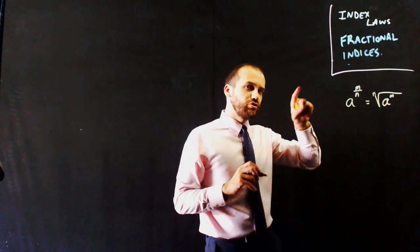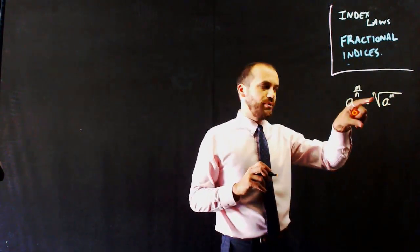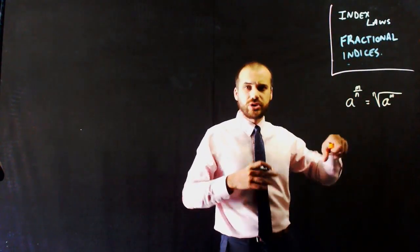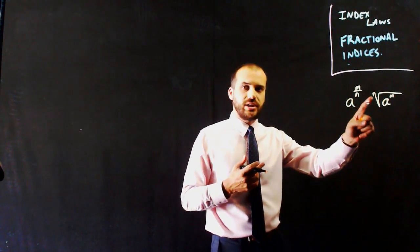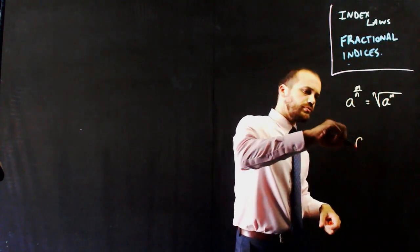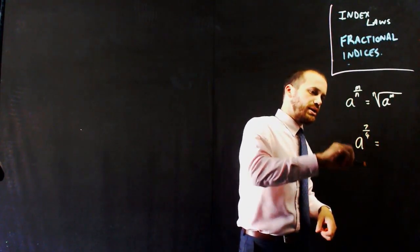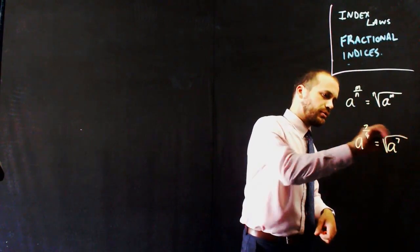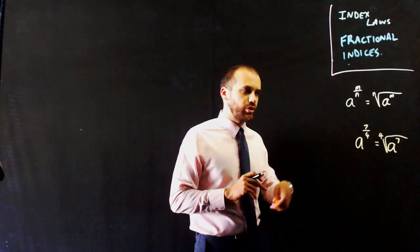So if you draw a root sign with no n there, with no number there, it just means it's a square root, but it could also be a cube root, or a fourth root, or a fifth root, depending on what that n is. Quick example: a to the 7 over 4 is going to be equal to a to the power of 7, the fourth root of that.